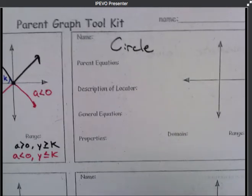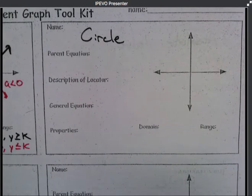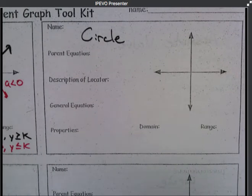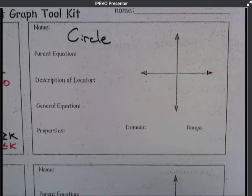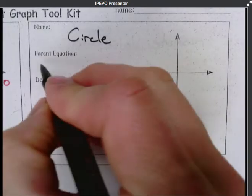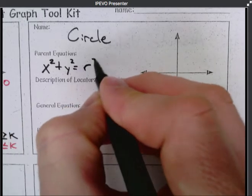Let's switch to circles now. Circles are going to be a little bit different for us because it can't be written in y equals. We've already talked about circles a little bit and how their equation is different and how their graph is different from others. So your parent equation has a lot more going on. It's x squared plus y squared equals r squared.